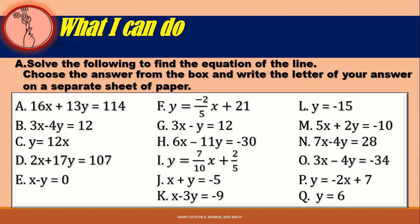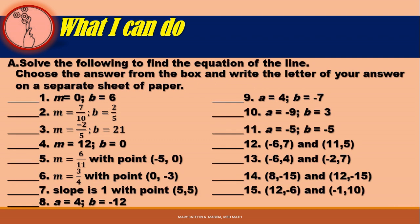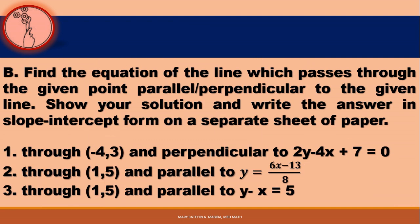Now that you have finished this module, here is what you can do. Solve the following to find the equation of the line — choose the answer from the box and write the letter of your answer on a separate sheet of paper. For the next set: find the equation of the line which passes through the given point, parallel or perpendicular to the given line, and write the answer in slope-intercept form. Problems include: through negative 4, 3 perpendicular to 2y minus 4x plus 7 equals 0; through 1, 5 parallel to y equals 6x minus 13 over 8; and through 1, 5 parallel to y minus x equals 5.